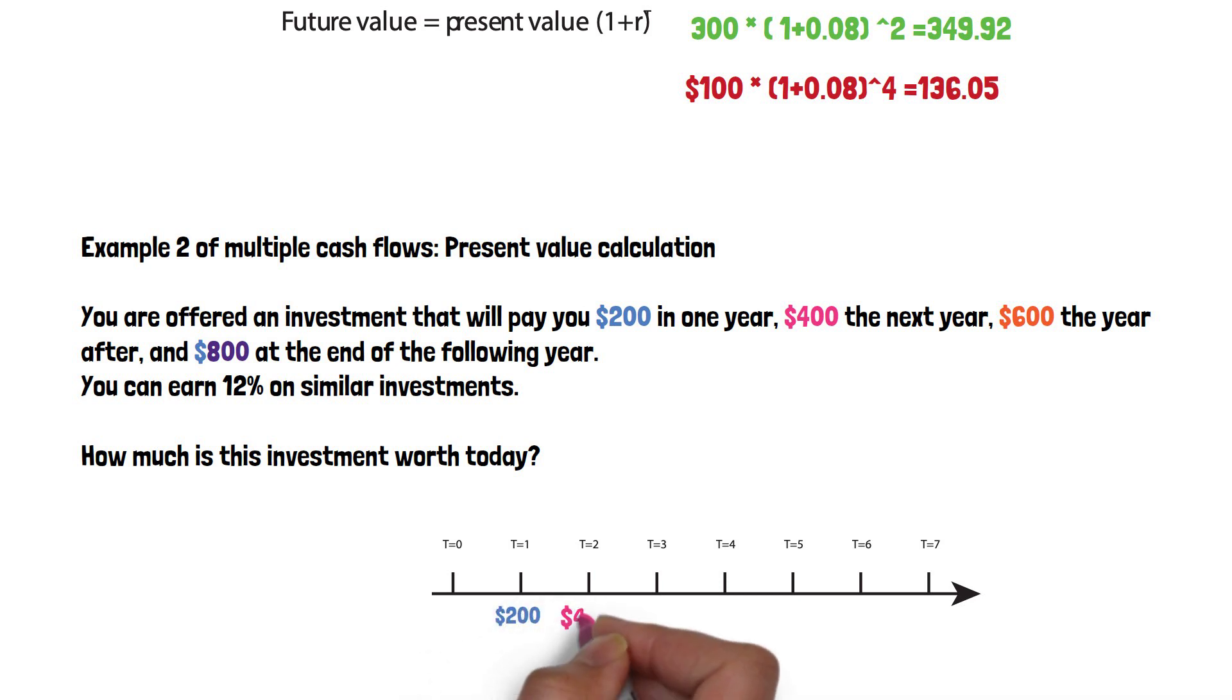So we know at the end of the first year, $200, and then $400, $600. At the end of the fourth year, $800.